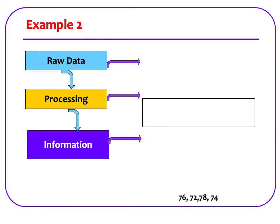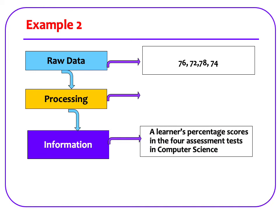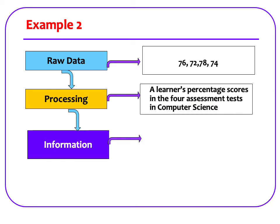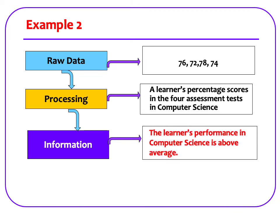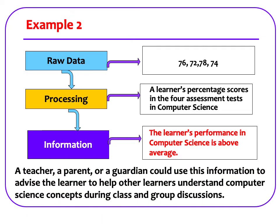76, 72, 78, and 74 are examples of raw data. These could be scores that a learner has obtained in four assessment tests in computer science. The information that can be gathered from these responses is the fact that the learner's performance in computer science is above average. A teacher, a parent, or a guardian could use this information to advise the learner to help other learners understand computer concepts during class and group discussions.